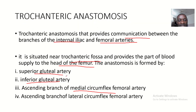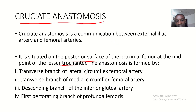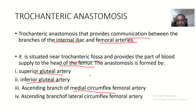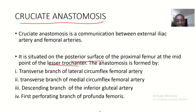The cruciate anastomosis is formed by the transverse branch of the lateral circumflex femoral artery and the transverse branch of the medial circumflex femoral artery. This is the transverse branch of the medial circumflex artery, and this is the transverse branch of the lateral circumflex artery.